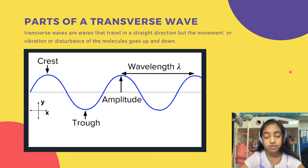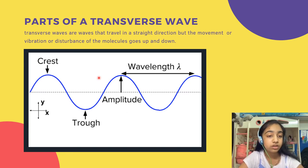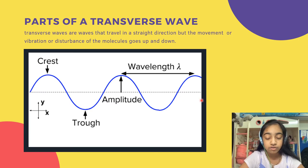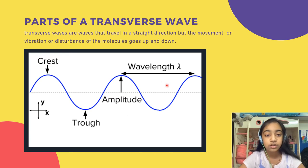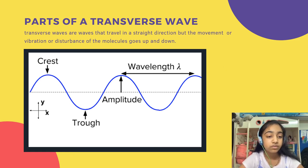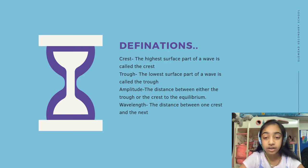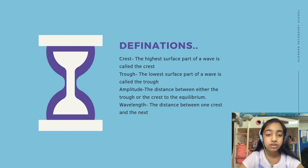Parts of a transverse wave: as we can see in the diagram, there are four main parts. The crest is the topmost part of the wave. The trough is the lowermost part of the wave. The equilibrium is the straight line showing the direction the wave is going. The amplitude is the distance between the equilibrium and the crest or the trough. The wavelength is the distance between two crests or two troughs.